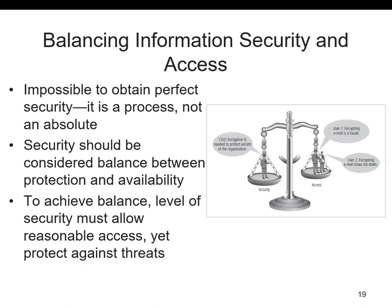Although we aim to secure information, it's important to realize that it's impossible to obtain perfect security. We need to make information available for users while also securing it, so security is a process, not a goal. Security should be considered a balance between protecting the information and making it available for users or customers. To achieve balance, the level of security must allow reasonable access yet protect against threats. When setting up a network, you can provide different access levels for different people and assign different roles — some will be admins, some will be able to review and edit, and some may have read-only permission.